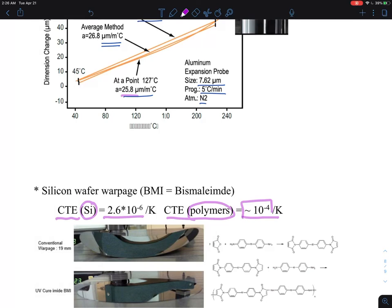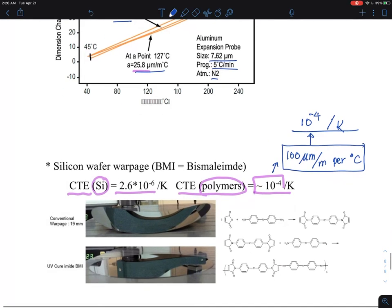If you have 100 micrometer, this value is essentially 100 micrometer divided by meter. That's 10 to the minus fourth per Kelvin, per degree C. So you can think about it that way as well. That's quite big changes.